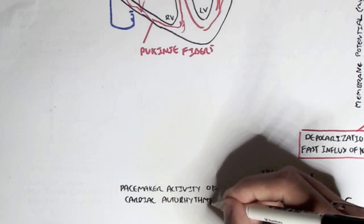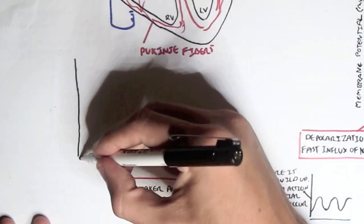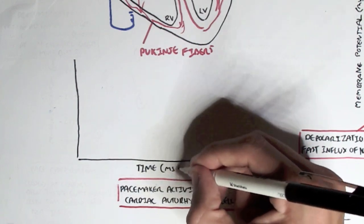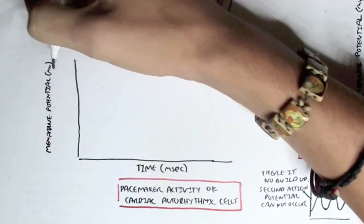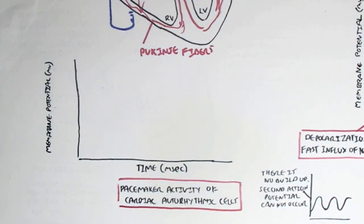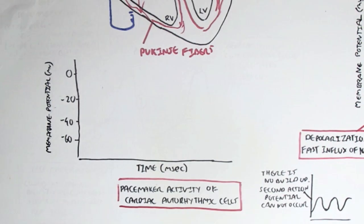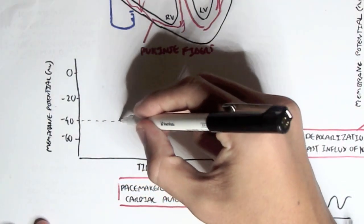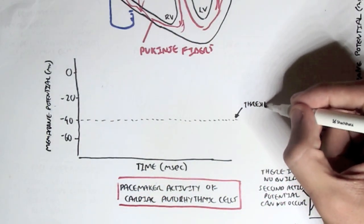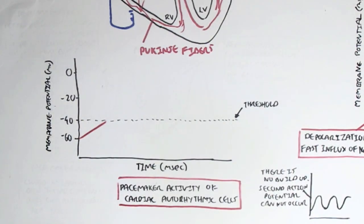Knowing the pacemaker cells, let's look at the pacemaker activity of cardiac auto-rhythmic cells — the activity of these pacemaker cells, which function and create action potentials without the help of neurons. Here we have a graph with time in milliseconds on the x-axis and membrane potential in millivolts on the y-axis, with values of negative 60, negative 40, negative 20, and zero millivolts. Negative 43 millivolts is the threshold for these pacemaker cells, particularly for the sinoatrial node.